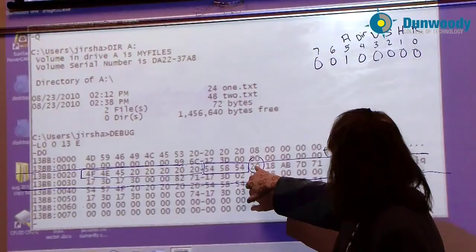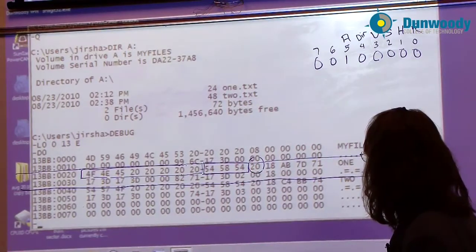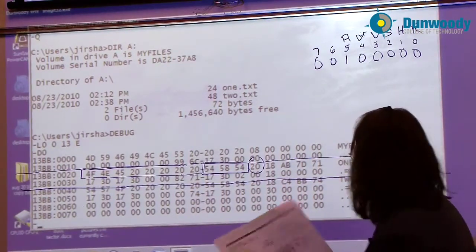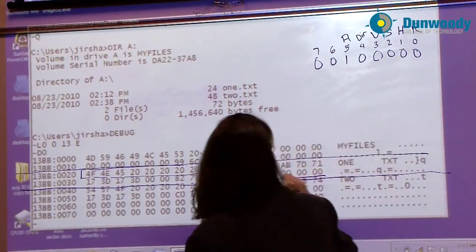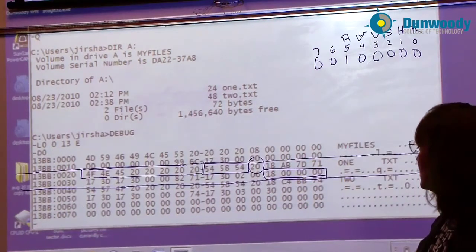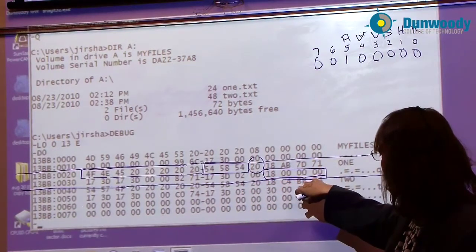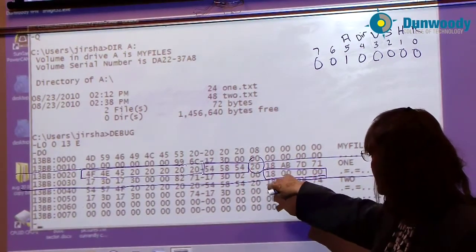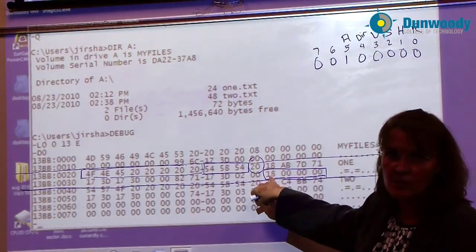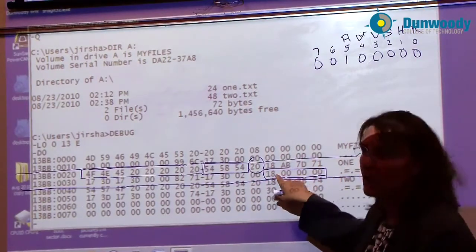We've looked at the archive byte already. Now let's jump to the end at a couple of the easier parts before we do the dates and time. The last four bytes in the entry are where the actual file size is stored. Four bytes reserved for the file size. Little endian, so what we have is 00000018 in hex. 18 in hex converted to decimal is 24. And remember that one dot text was a 24 byte file.